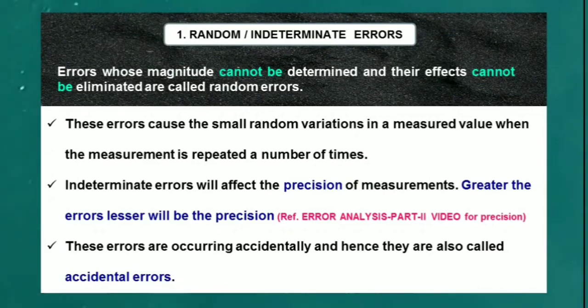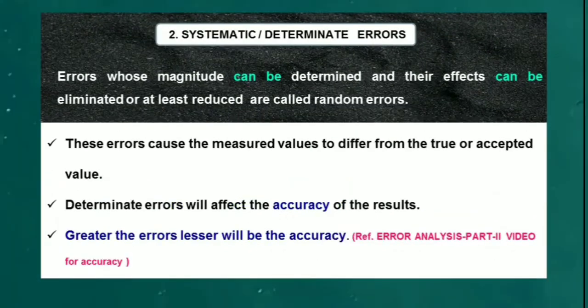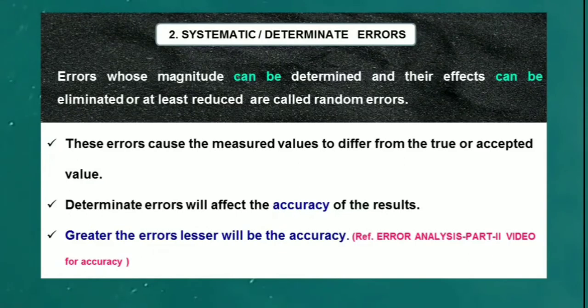These errors are occurring accidentally, hence they are also called accidental errors. Next, systematic or determinate errors: as the name implies, these are errors whose magnitude can be determined and their effects can be eliminated or at least reduced. These errors cause the measured values to differ from the true or accepted value. Determinate errors will affect the accuracy of the results—greater the errors, lesser will be the accuracy.